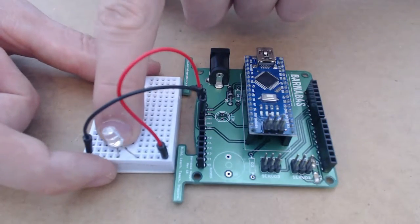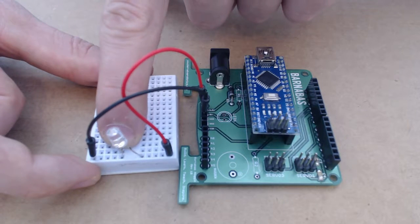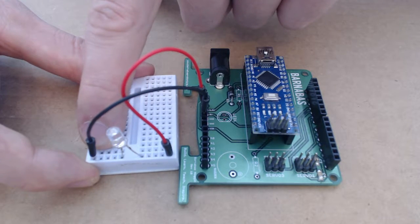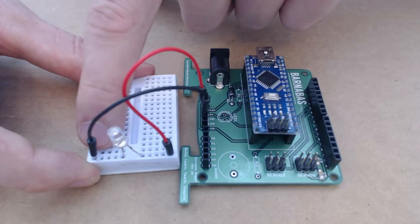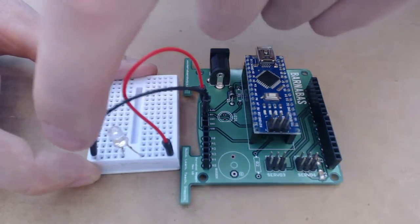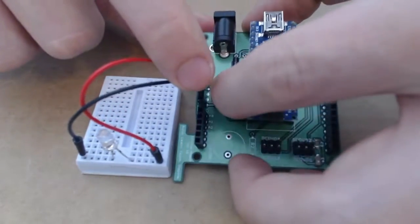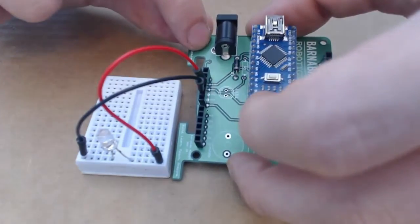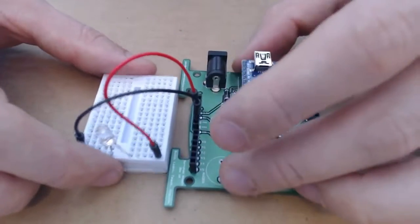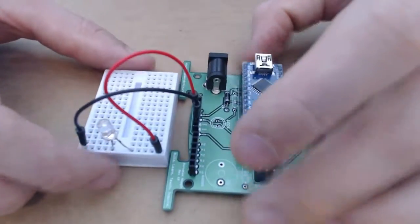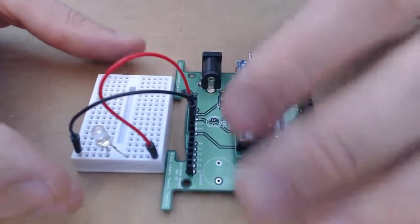And then on the other side I have the short leg of the LED and this black wire with one end of it attached on the same row. And that black wire ends up going all the way back to the Barnabas noggin into one of the pins that says ground, or GND. So there's two pins that say GND. You can choose either one of them. They'll both work.